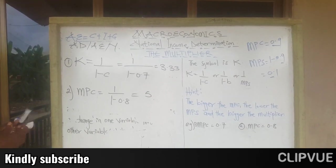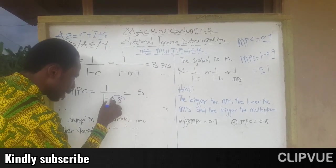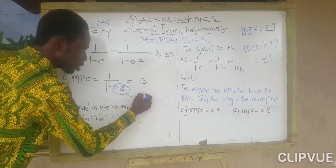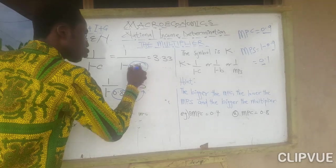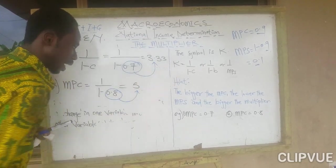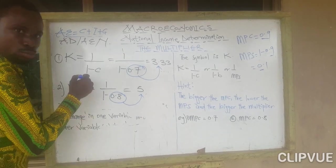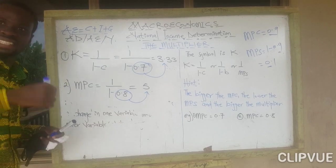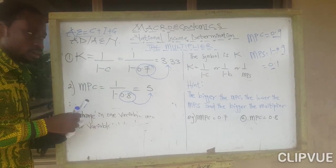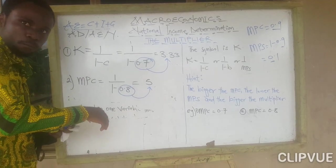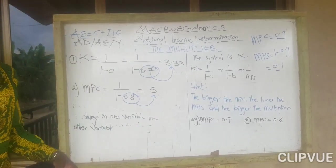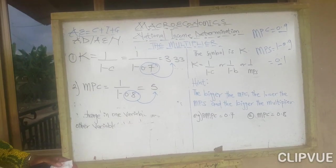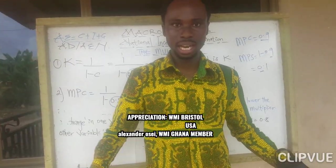Have you seen it? The bigger the marginal propensity to consume, the bigger the multiplier — 5 versus 3.33. And the smaller the MPS, the bigger the multiplier. That is how it works. Once again, my name is Alexander Osei from Ghana. Bye bye.